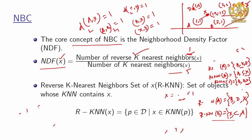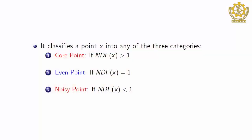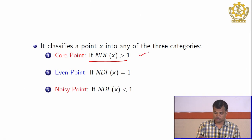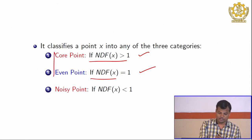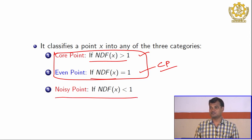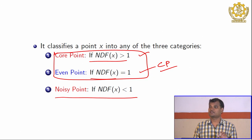Based on the NDF value, we define three categories of points. If NDF > 1, the point is a core point. If NDF = 1, it is an even point. Together, core points and even points are called cluster points. If NDF < 1, the point is a noisy point. This is similar in style to DB scan, but DB scan uses epsilon and minimum point, while NBC uses the neighborhood relation — NDF.